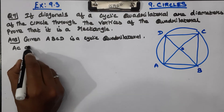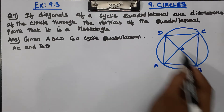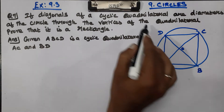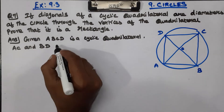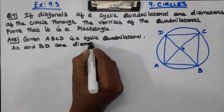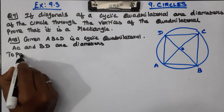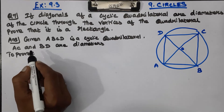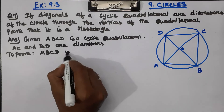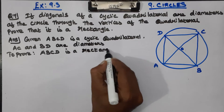AC and BD are diameters of the circle. Now there are two points to prove. How do we prove? A, B, C, D - this diagram is a rectangle. We can prove it is a rectangle.